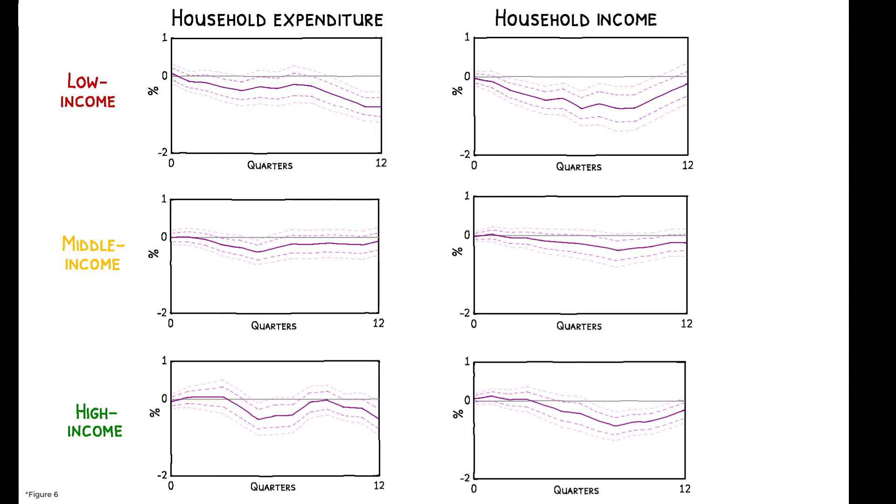Household-level data from the UK shows that low-income households are more severely affected by both the direct and indirect effects of carbon policy shocks.